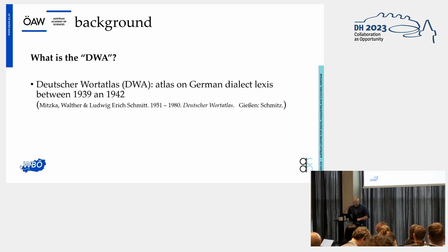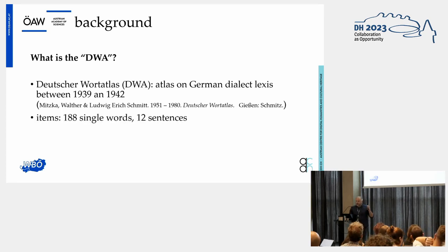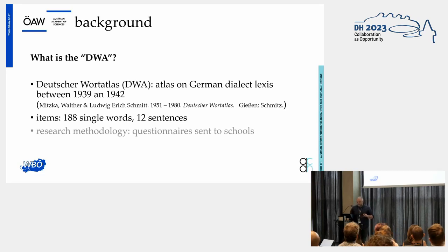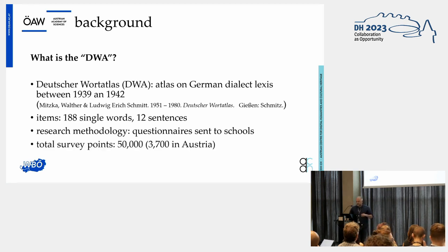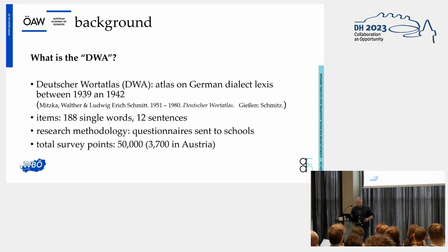So what is the DVR? The DVR is the Deutsche Wortatlas — the German atlas for German lexical dialects. The basis of this atlas is an item list of 188 single words and 12 sentences, though we are mostly interested in the words. The survey method was an indirect one: questionnaires were sent to teachers and students and filled out by them. It has a total of 50,000 survey points in Germany and Austria, and 3,700 in Austria itself.